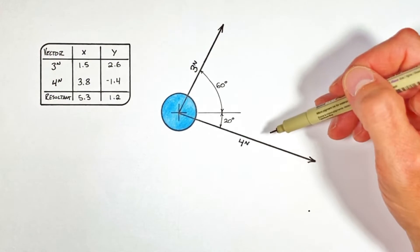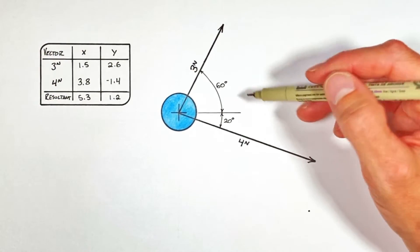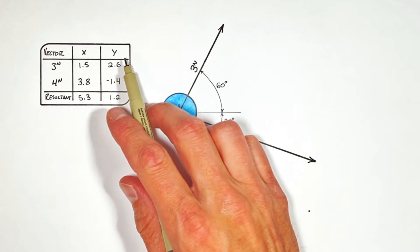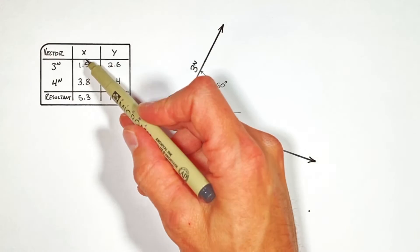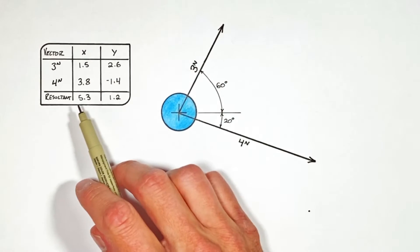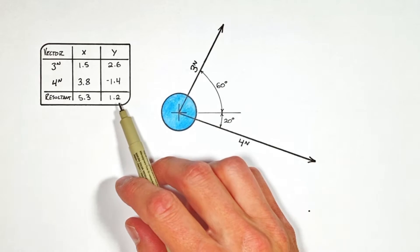Previously we've talked about how to add together vectors mathematically by breaking each individual vector up into its x and y components using sine and cosine, then adding together all the x components and separately the y components in order to get the components of a resultant vector.